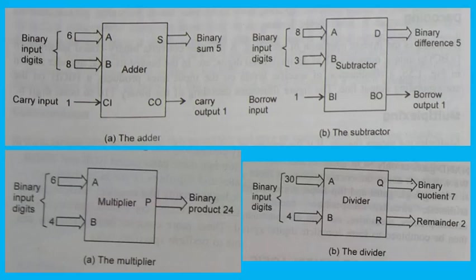The arithmetic operation of addition is performed by a digital logic circuit called the adder. Its function is to add two numbers — addend A and augend B — with a carry input Ci, and generate a sum term S and a carry output term Co. The block diagram illustrates the addition of the binary equivalents of 8 and 6 with a carry input of 1, which results in a binary sum term 5 and a carry output term 1.